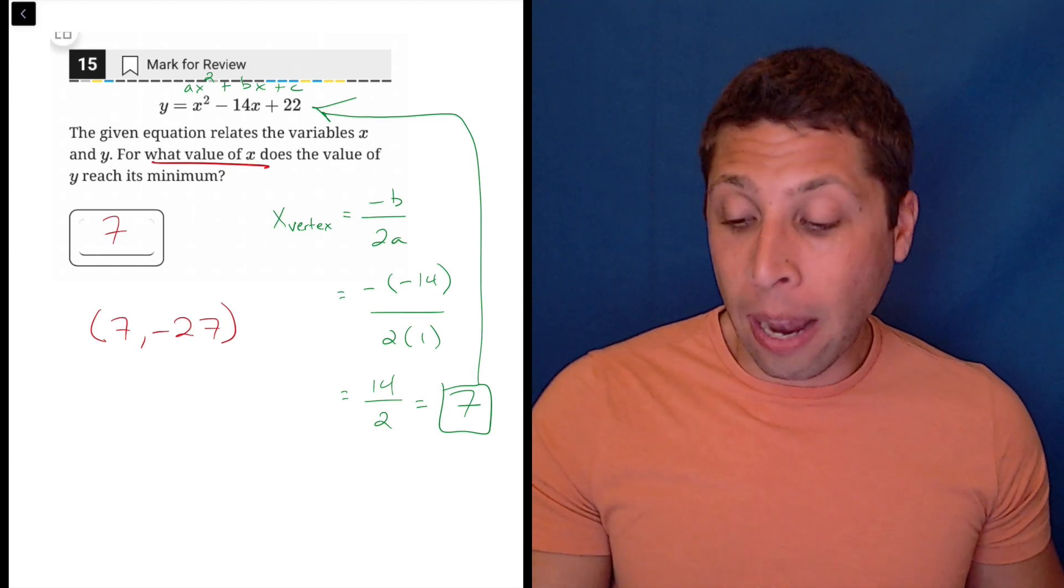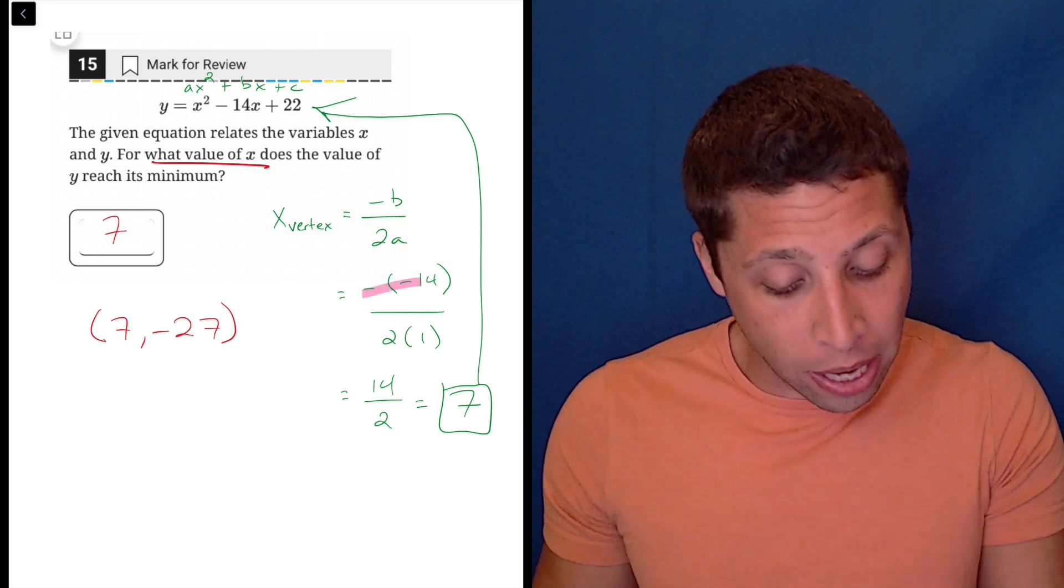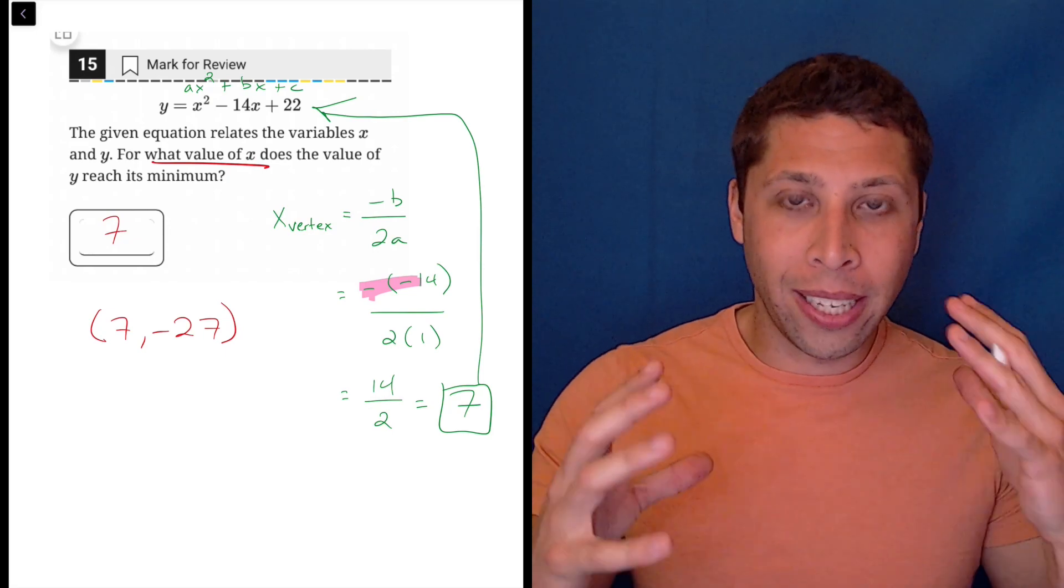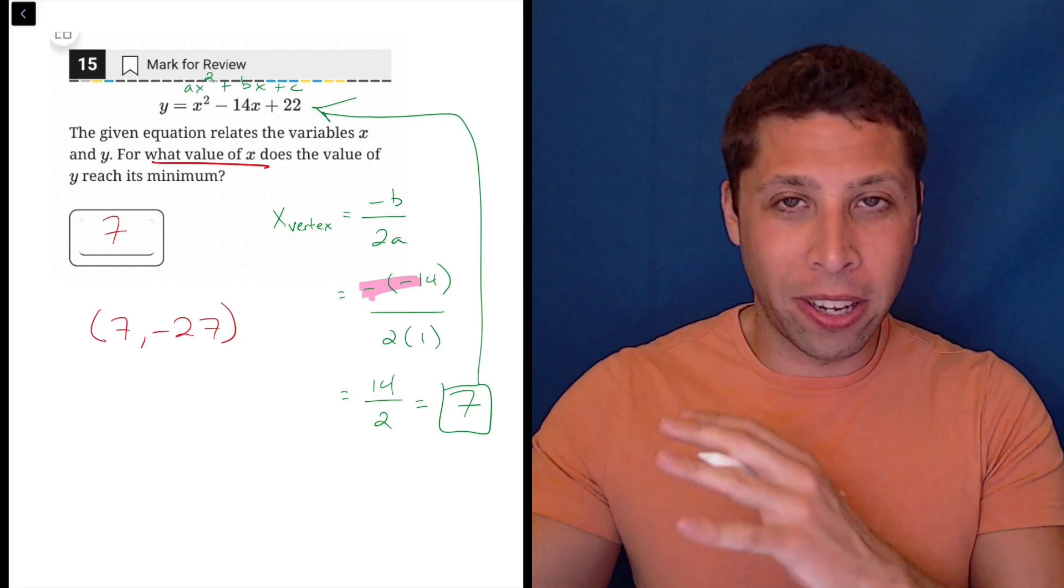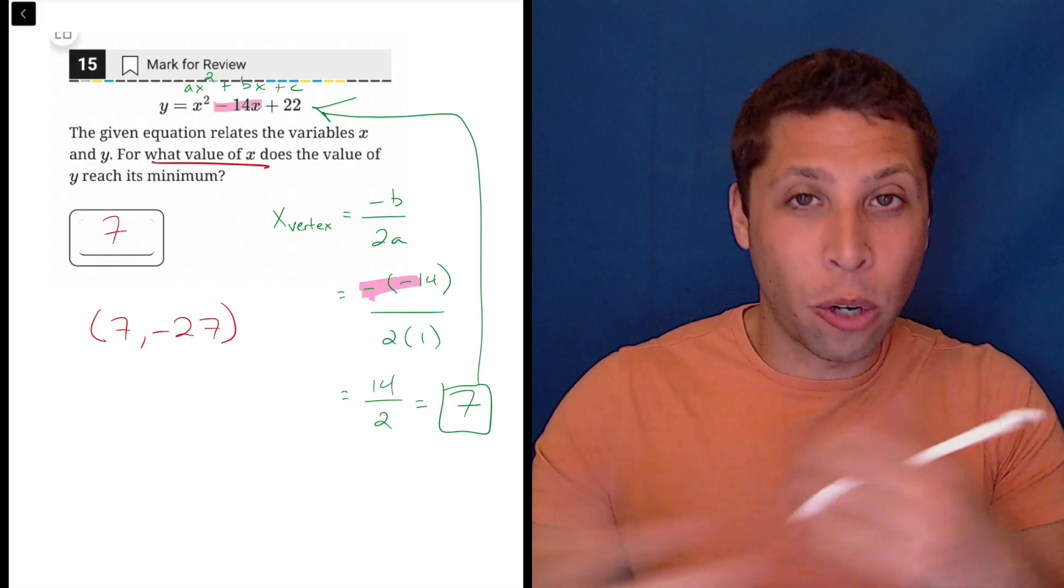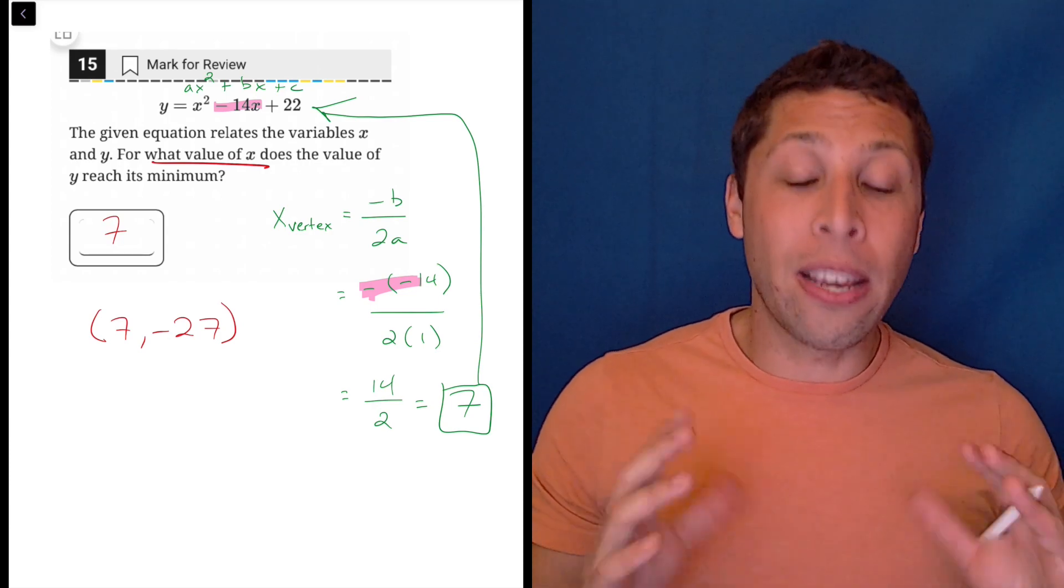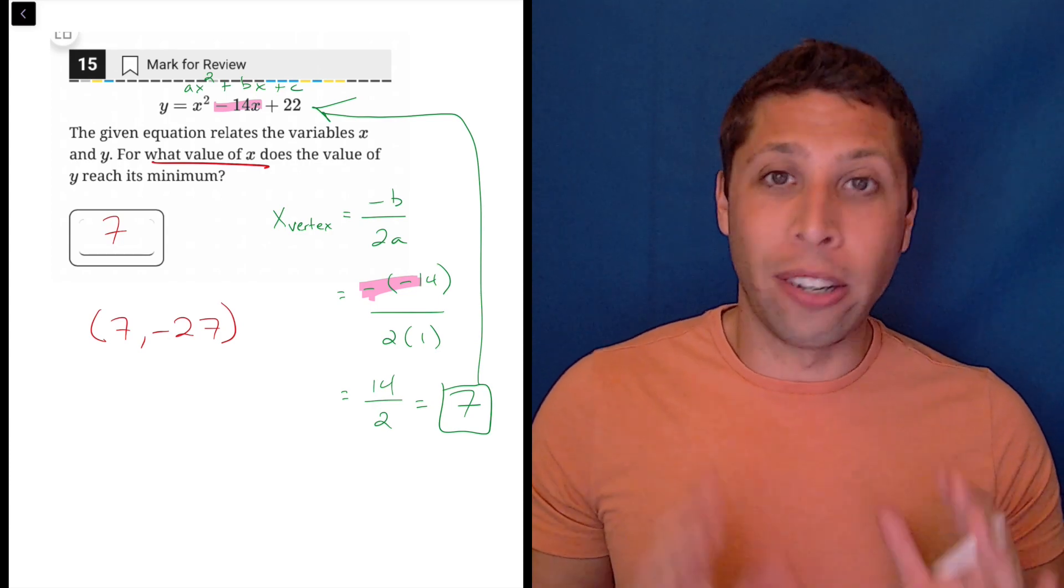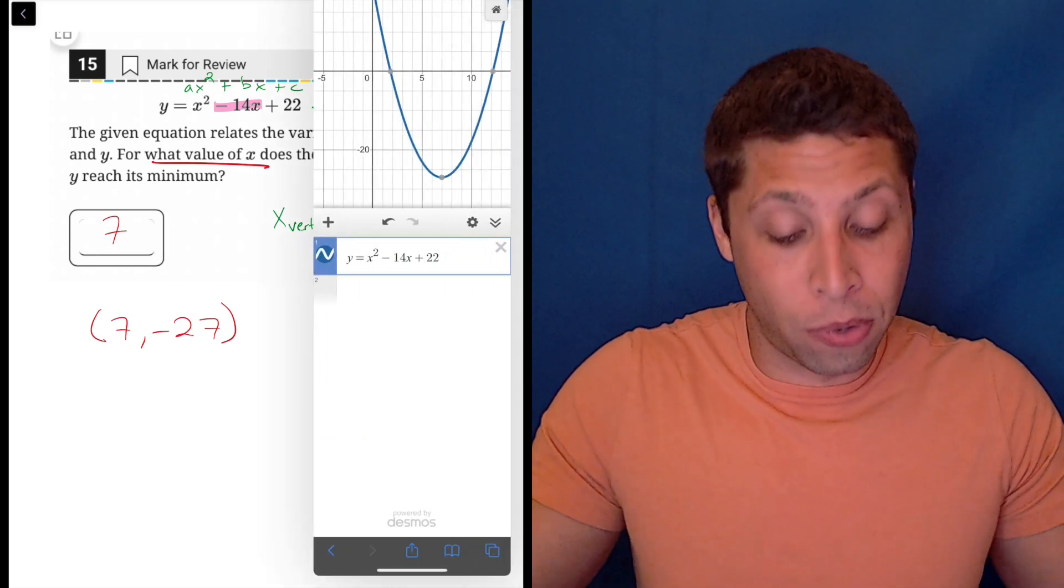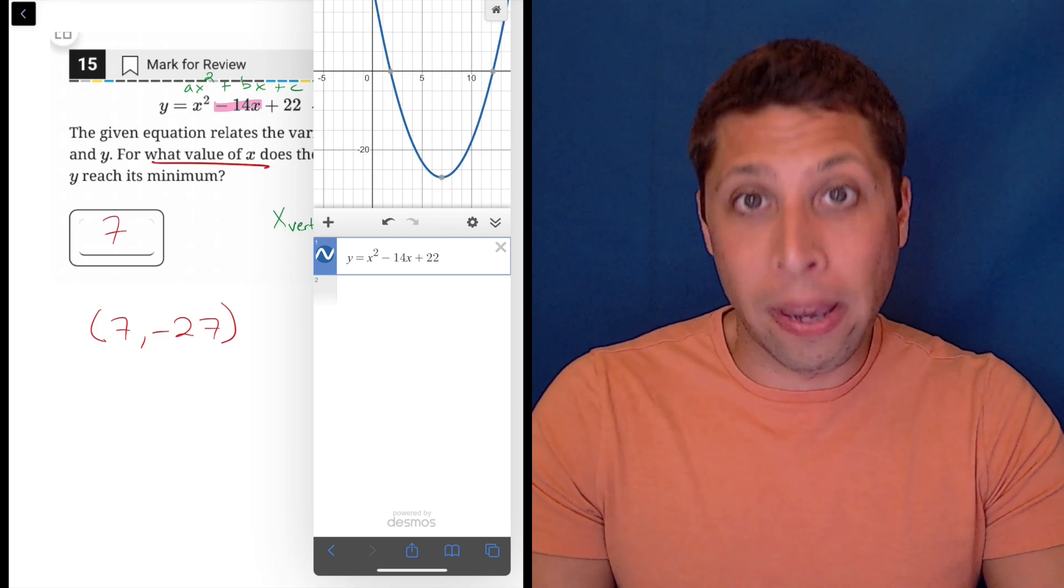But remember, anytime you go down the algebra path, there's a chance for mistake. For many of you, that mistake would have happened right here with those two negatives because your brain kind of sees the negative that's already there and kind of accounts for it without remembering that the negative that's in the equation is its own thing and needs to come along. So even if you know this equation, there is still a chance for an error, whereas if you just graph it, it's kind of hard to mess up. So I do think the graphing calculator is the way to go if you frequently make careless mistakes.